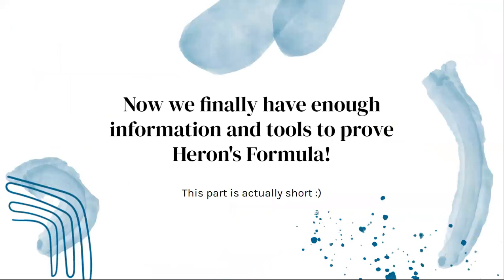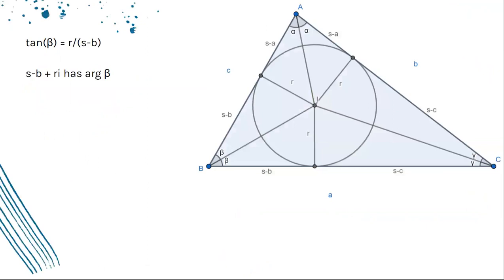Now we have enough information and tools to prove Heron's formula. So we can start by realizing that the tan of beta is R divided by S - B, which we can see from this triangle. We can represent this using complex numbers. The complex number with an x of S - B and a y of R is going to have argument beta. This means that S - B + Ri has argument beta.